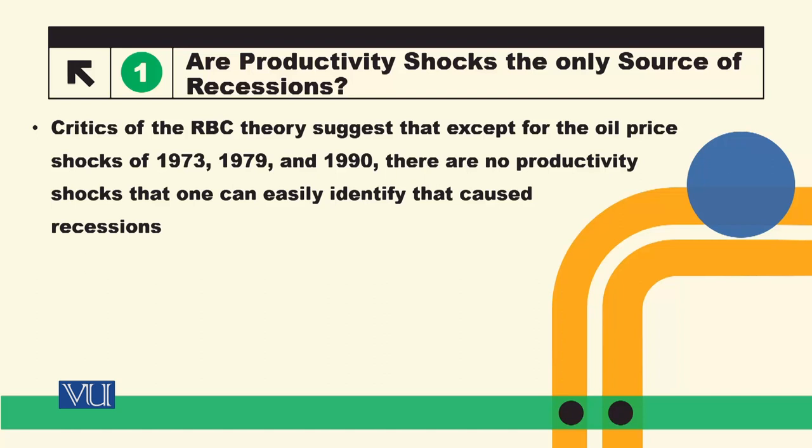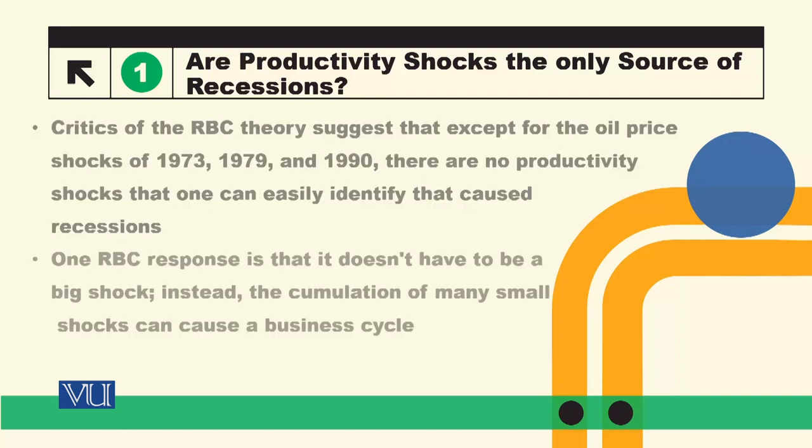In response to this criticism, RBC economists say it does not have to be a big shock. Instead, the accumulation of many small shocks can carry the business cycle. So this is their response — recessions can begin without one large identifiable shock.